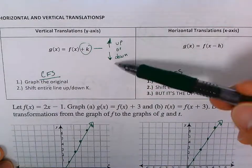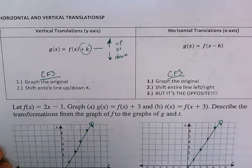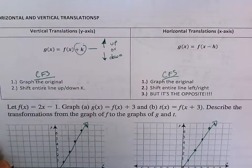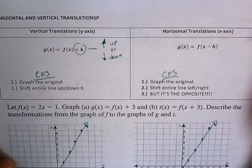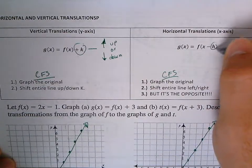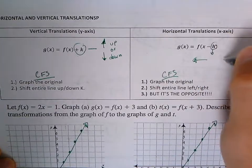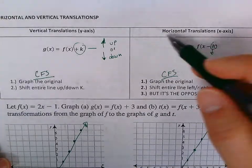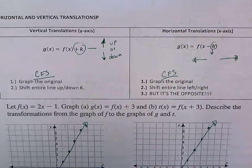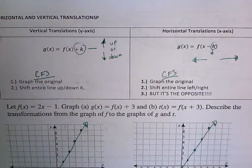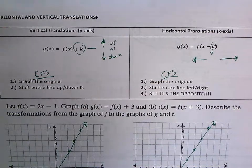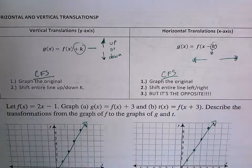That means every point in my graph will move up or down k units. If the number is inside the parentheses, my graph will move left or right — that means it's a horizontal translation. The cool thing about this, which some people find confusing, is that the value of h is always the opposite of what you see inside the parentheses.